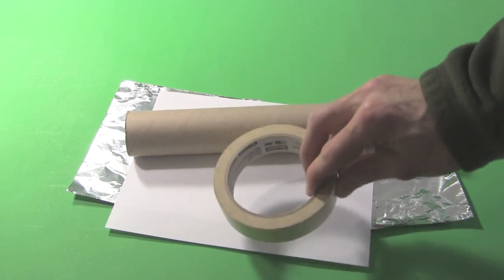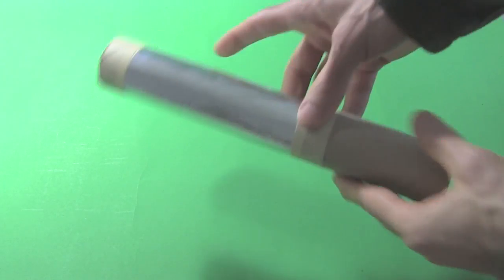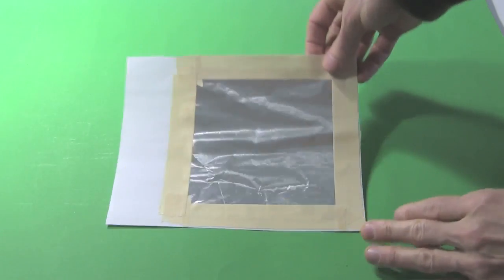And some tape. It doesn't really matter what kind. Tape one of the pieces of the aluminum foil to the paper towel roll near one end. Tape the other piece of aluminum foil on one end of the piece of paper.